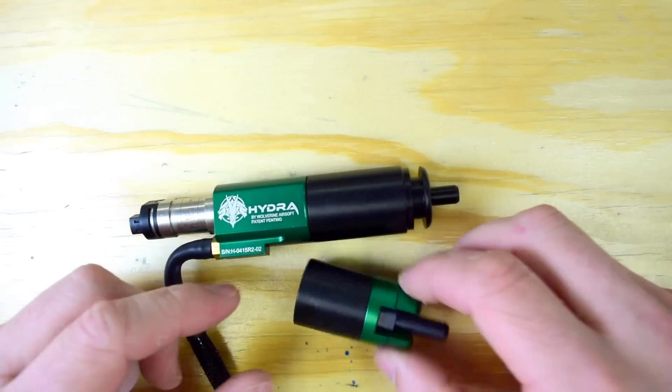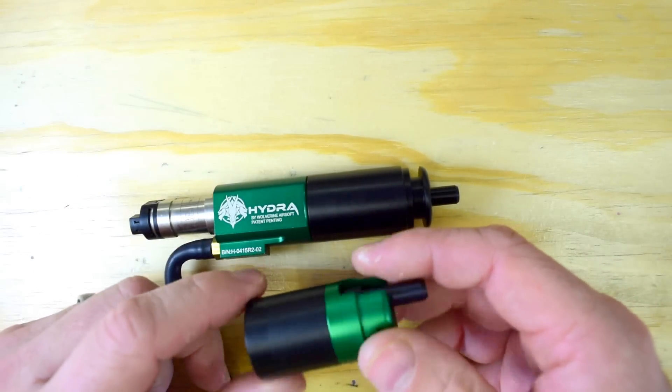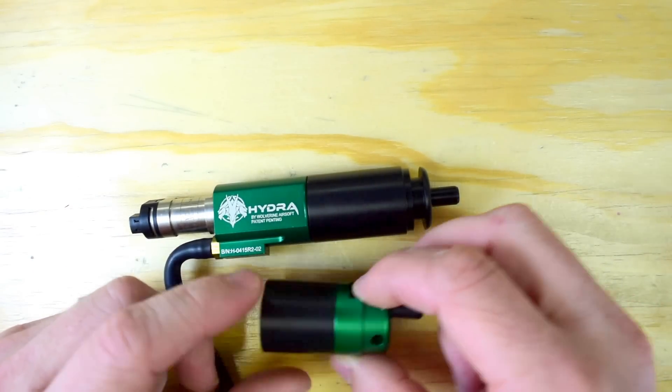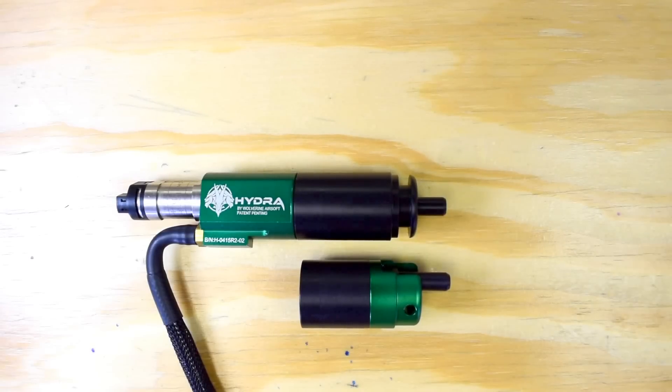You just unscrew the entire thing, and you can keep this, and when you decide to swap it back, you just pop it right on. So that's how you do an Evolution Kit with Wolverine Airsoft Evolution Series.